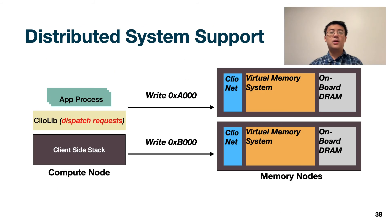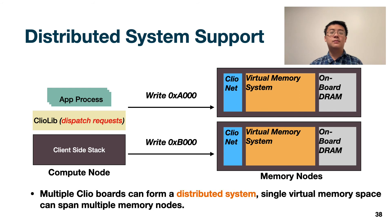Further, multiple Clio boards can form a distributed system. We allow a single virtual memory space to span over multiple memory nodes. At memory allocation time, a distributed manager at the memory node will work together with the Clio library at the client and a global memory manager to decide where to allocate the memory. At memory access time, the Clio library ensures that the request is sent to the correct memory node that holds the physical memory.